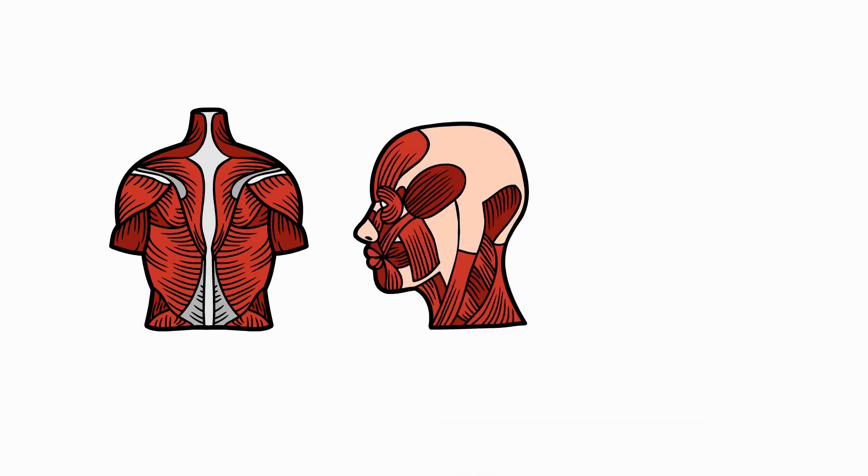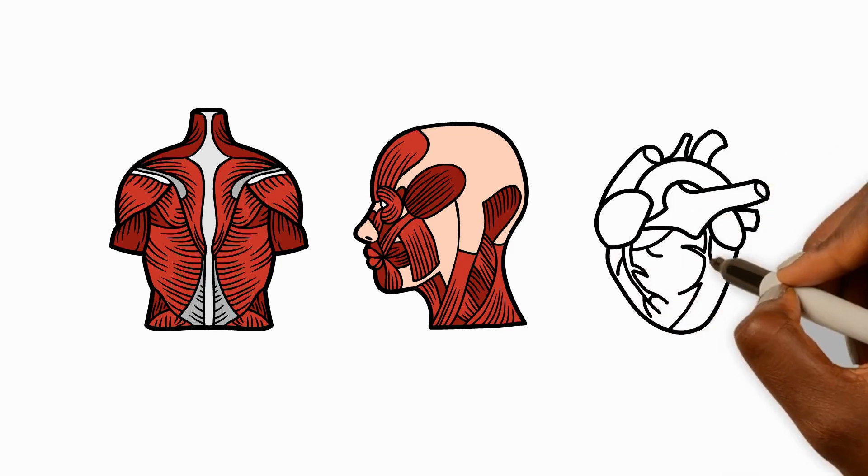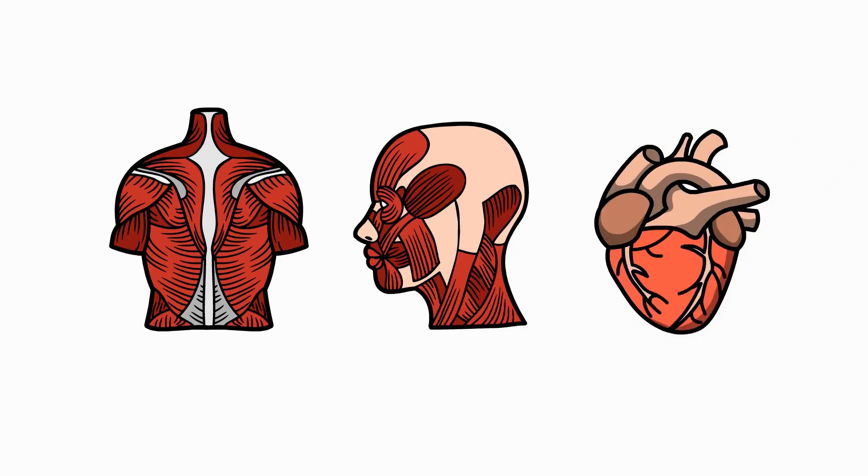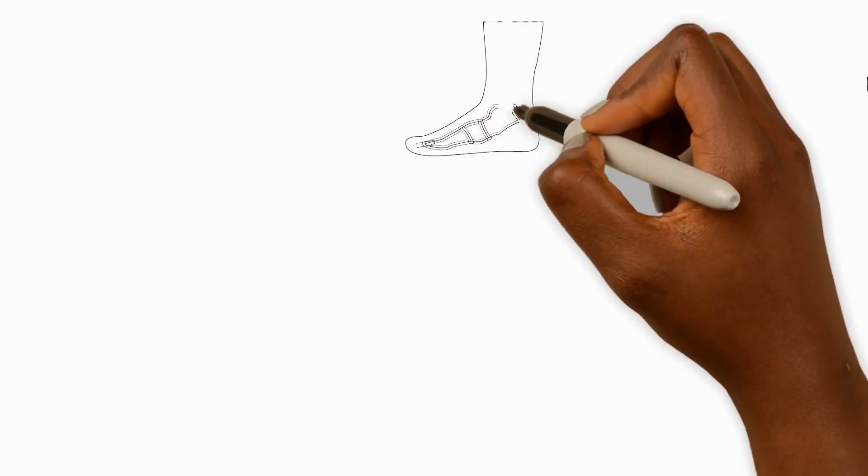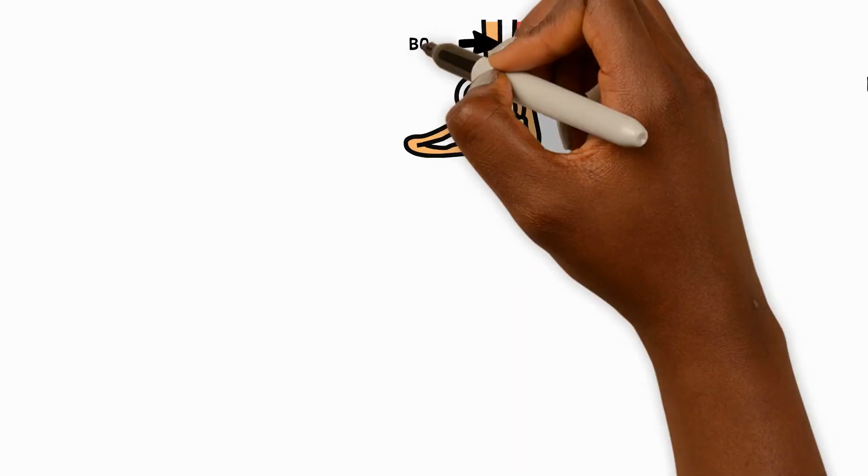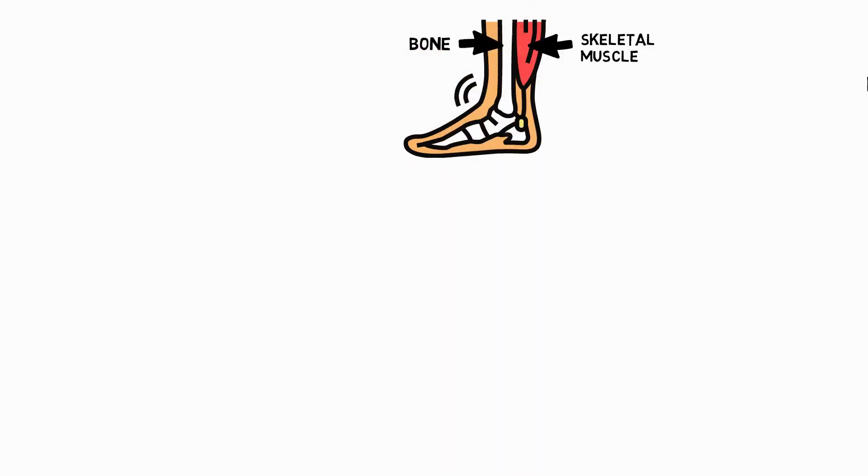Some muscles work without us having to think about them, like the heart muscle which pumps about 100,000 times a day. But there's another type of muscle called skeletal muscle which is attached to our skeleton. This is the kind we have to think about for it to work. These muscles help us stand still, write, and even breathe.